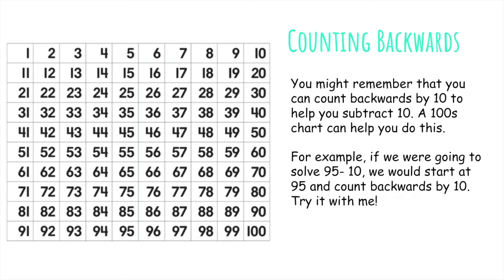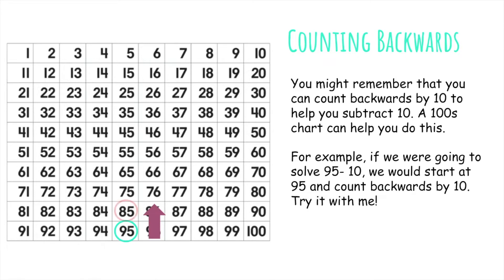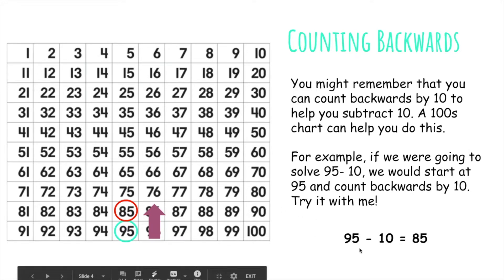Try it with me. So I know I'm going to start at 95 and count backwards by 10. Count backwards with me: 95... 85. We just counted backwards by 10 and stopped at 85. So that means 95 minus 10 is equal to 85. We just solved this problem by counting backwards.